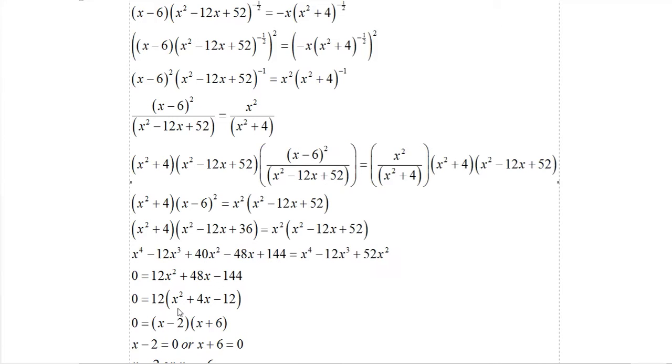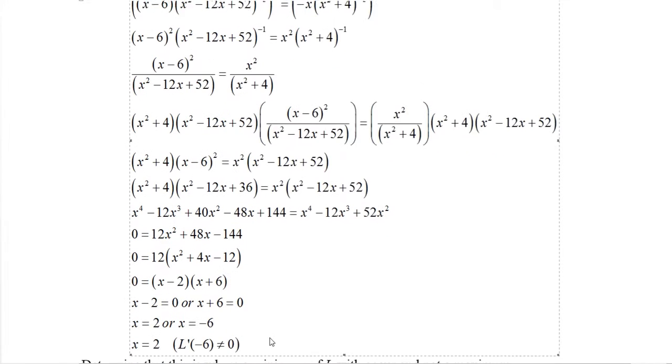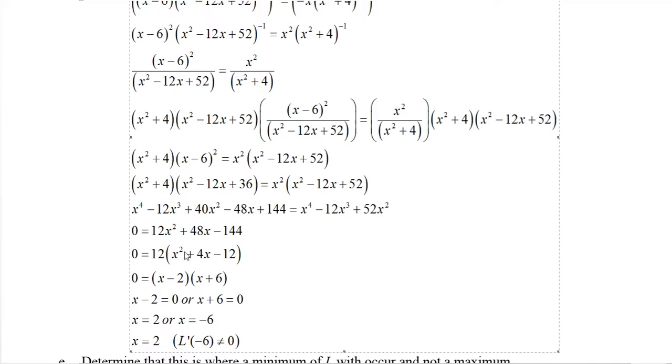Factor out a 12 out of that, and this factors as x minus 2 and x plus 6. So either x minus 2 equals 0 or x plus 6 equals 0. I divided both sides by 12 to get rid of that. Either x equals 2 or x equals negative 6.